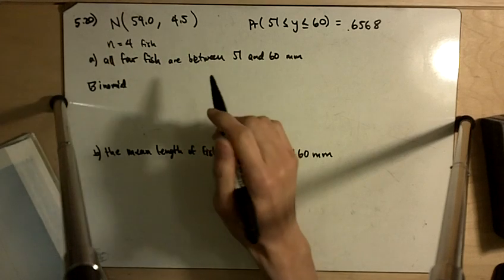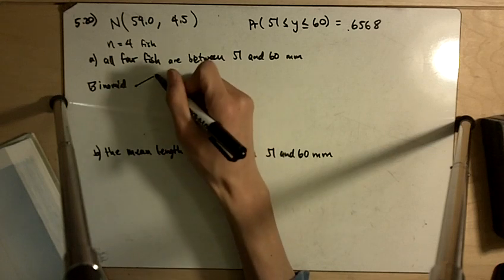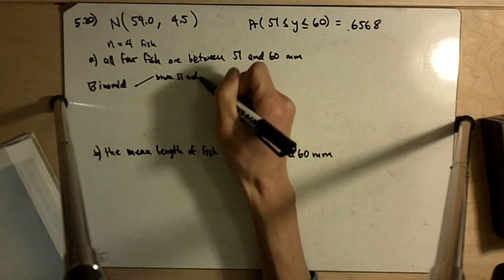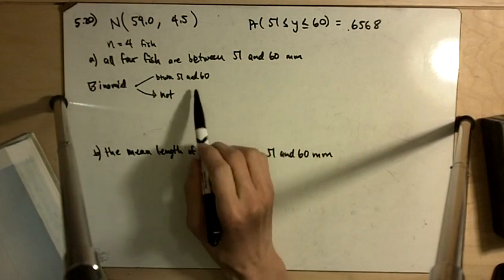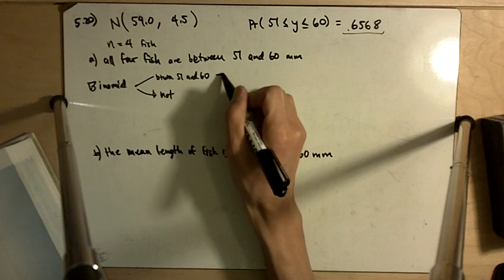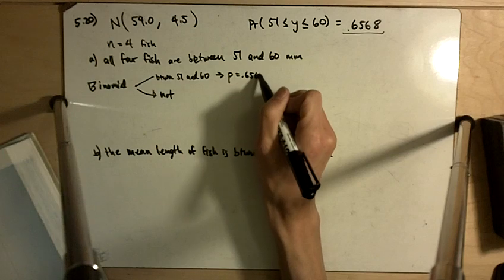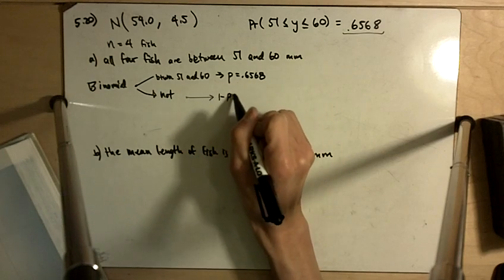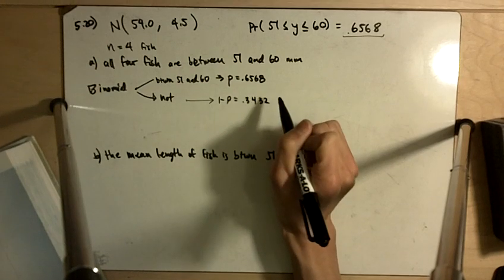All right, because each fish can either have two outcomes. It's either between 51 and 60 or it's not. And the probability that it's between 51 and 60 is provided to us. That probability is equal to 0.6568. And so the probability that it's not is going to be 1 minus P, which is 0.3432.